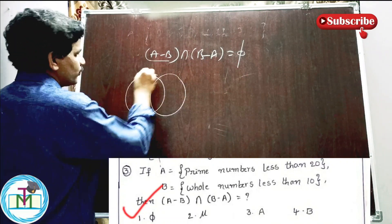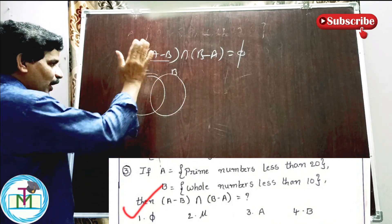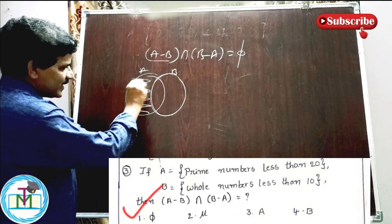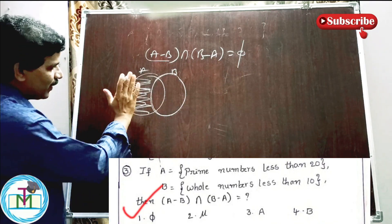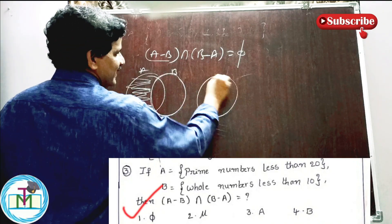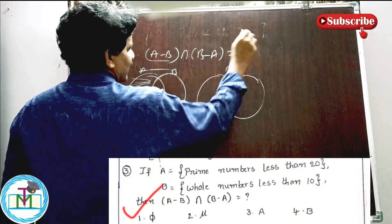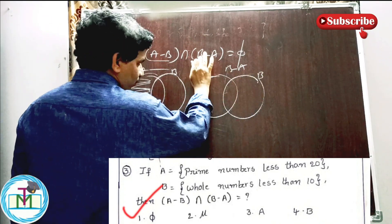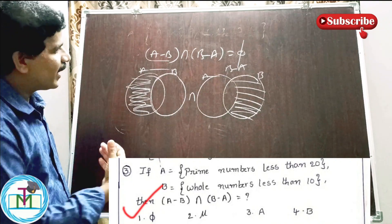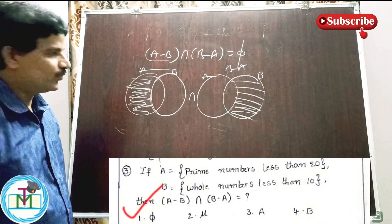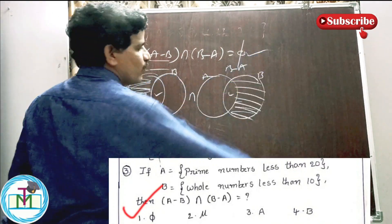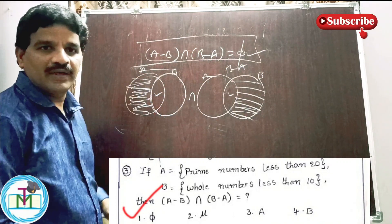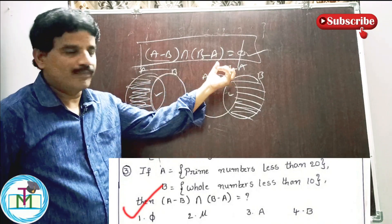A minus B contains elements that belong to A but not B. B minus A contains elements that belong to B but not A. Their common area — the intersection — is empty. So (A minus B) intersection (B minus A) is equal to the empty set. Option 1 is the right answer.